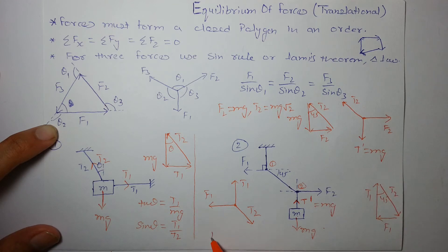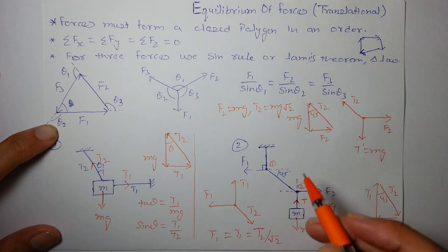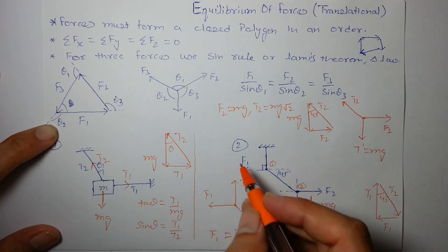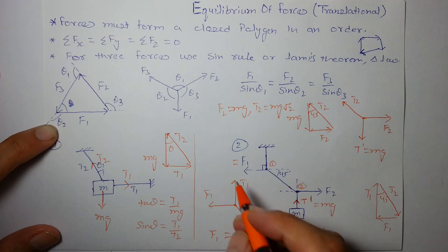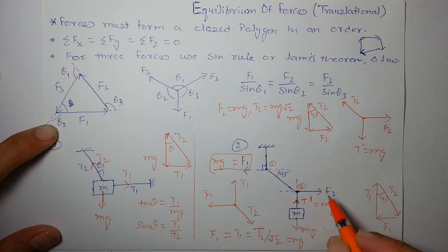So, f1 is nothing but t1 which is equal to t2 by root 2. So, t2 is mg root 2. So, this is equal to mg. We can easily find f1 and f2. We got f1 as mg. And f2 is equal to mg. Both the forces are equal to mg.